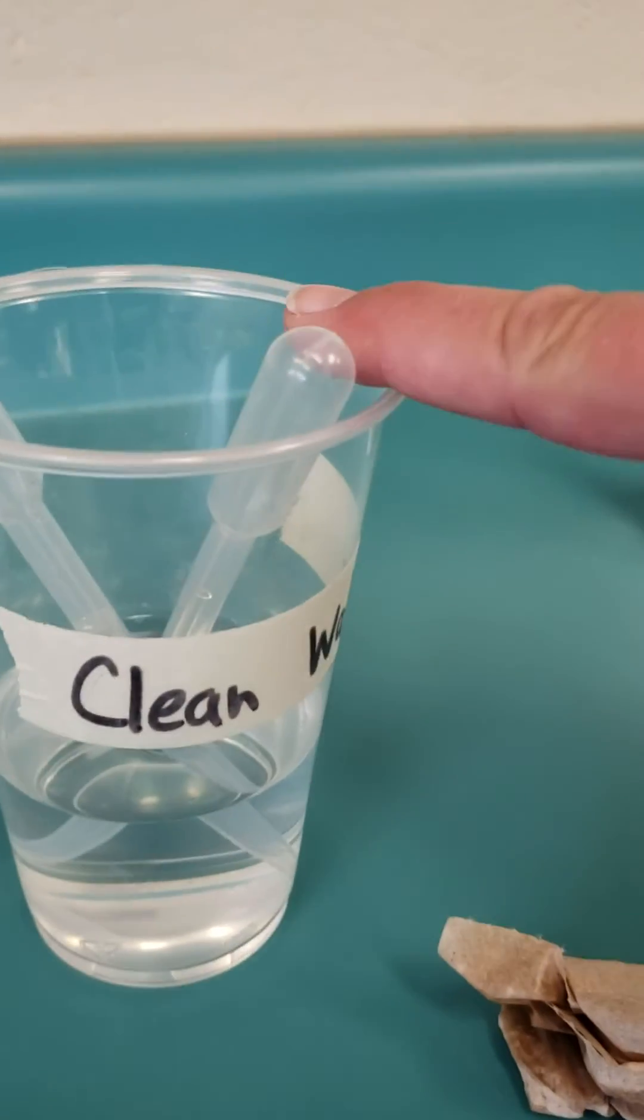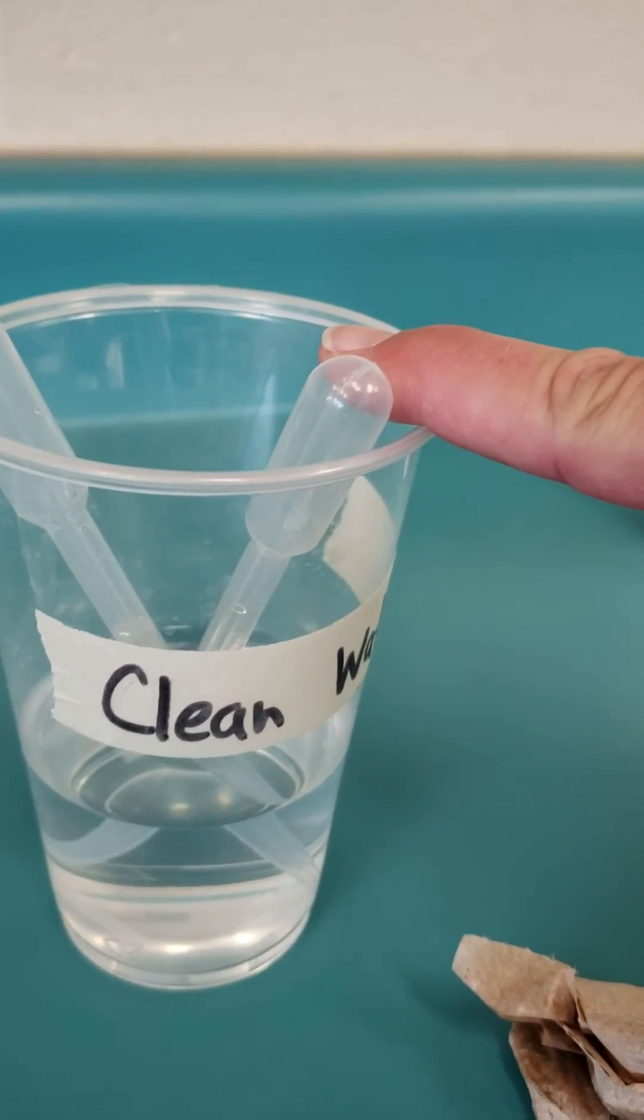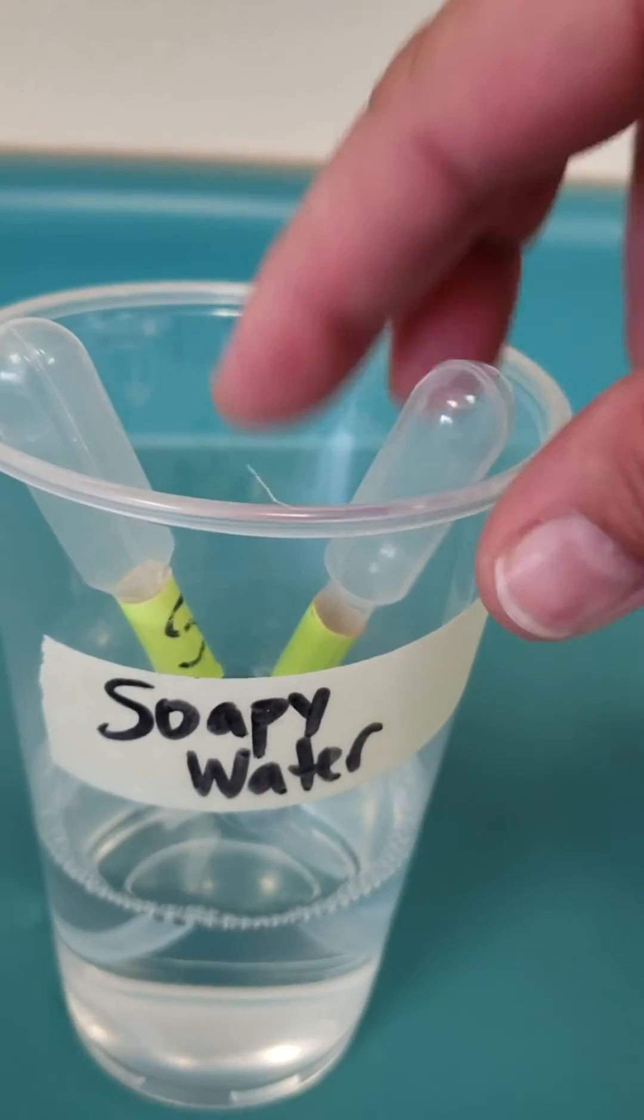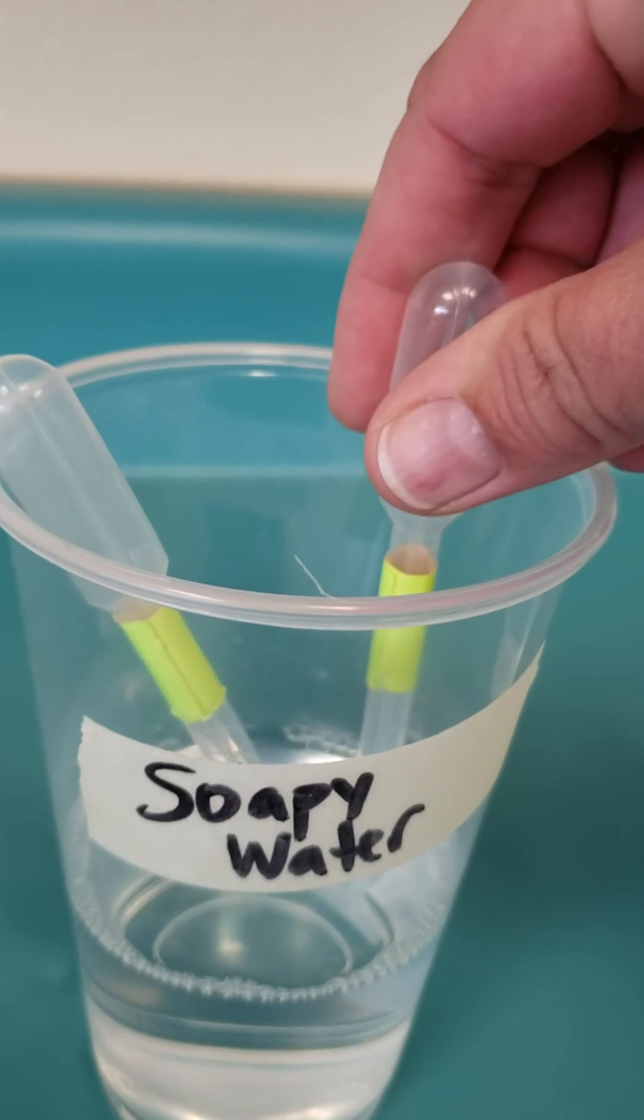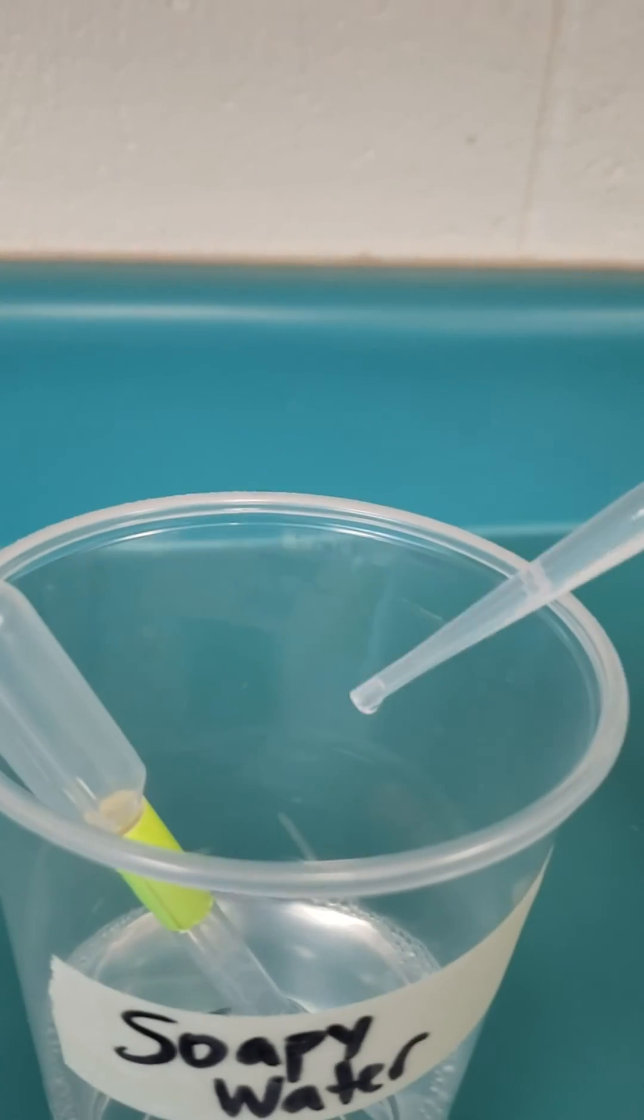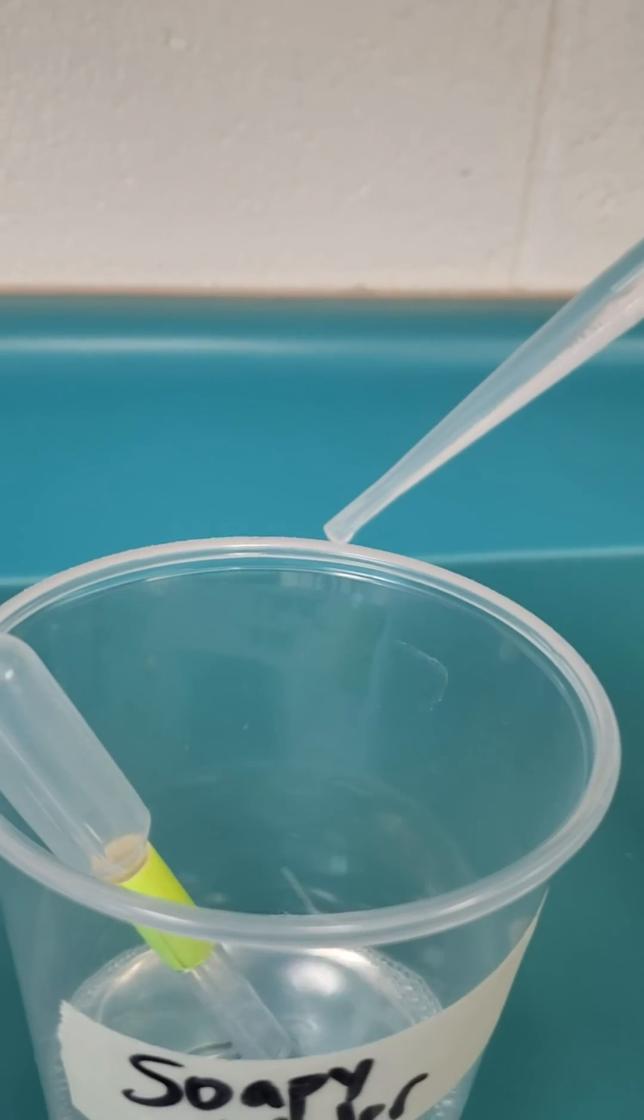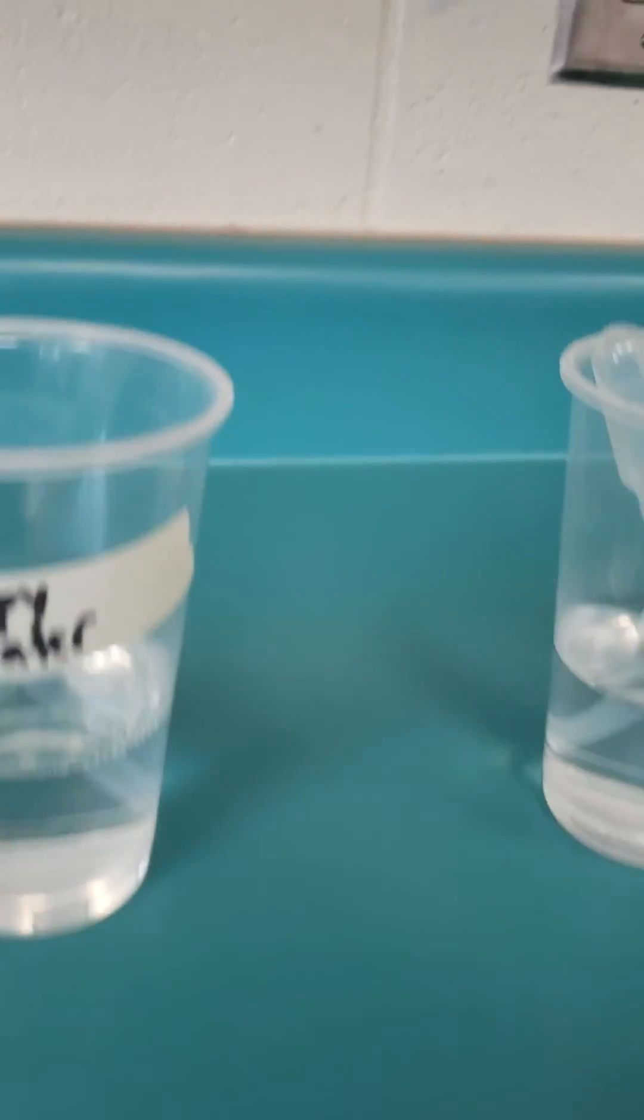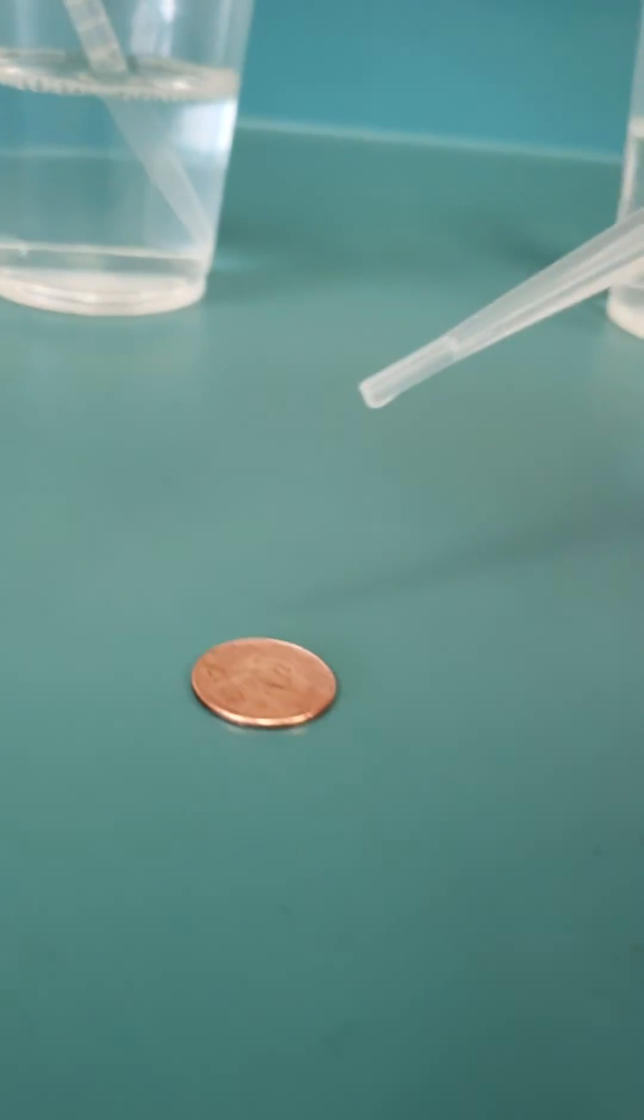Well, polar water with a positive and negative side is going to be able to stick to things well. Let's look at soapy water. The soap now has broken that polarity and we see that it doesn't even make as big of a drop of water as the clear clean water did. So let's see what this does on our penny.